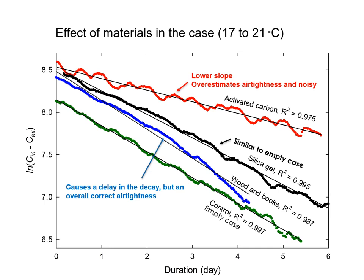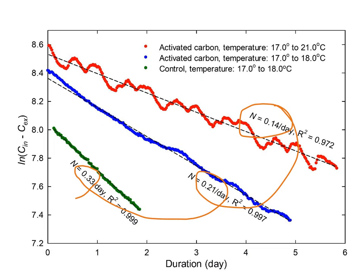What was very surprising is that with activated carbon in the cases, we have a different slope and a very noisy signal — activated charcoal is very sensitive to CO2 changes. The tests were done in a temperature range of 17 to 21°C. When we minimized the temperature fluctuation from 17 to 18°C, the slope got less steep and closer to the silica gel result. High temperature fluctuation with activated charcoal will give you a wrong result and a very noisy signal. So to be safe, it is better to test your cases empty and with minimal temperature fluctuation.